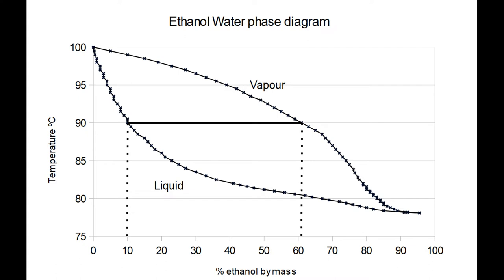If we condense that vapour mixture we get a liquid of 60% ethanol and 40% water, and if we boil that liquid we get vapour that is about 82% ethanol. Repeating that process gets us ever closer to the azeotropic point of 95.63% ethanol by mass, or 96.51% by volume.